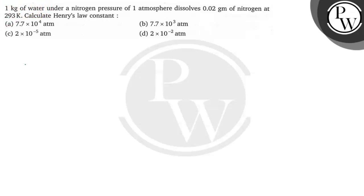Hello Bacho, let's read the question. The question says 1 kg of water under nitrogen pressure of 1 atmosphere dissolves 0.02 grams of nitrogen at 293 Kelvin. Calculate the Henry's law constant.